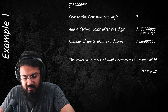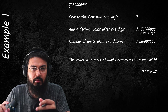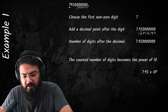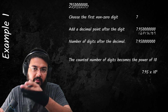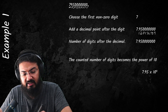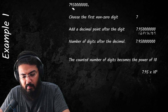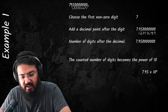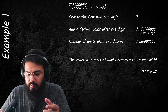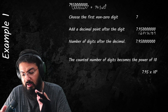You can also think of it this way: whenever a number has no decimal point written, the decimal place is assumed to be at the end. Count how many decimal places you need to move to the left to get only one non-zero digit to the left — that's 1, 2, 3, 4, 5, 6, 7, 8, and 9 places. Moving only 8 places would give 79.5 × 10⁸, which is mathematically correct but violates the rules of standard form.